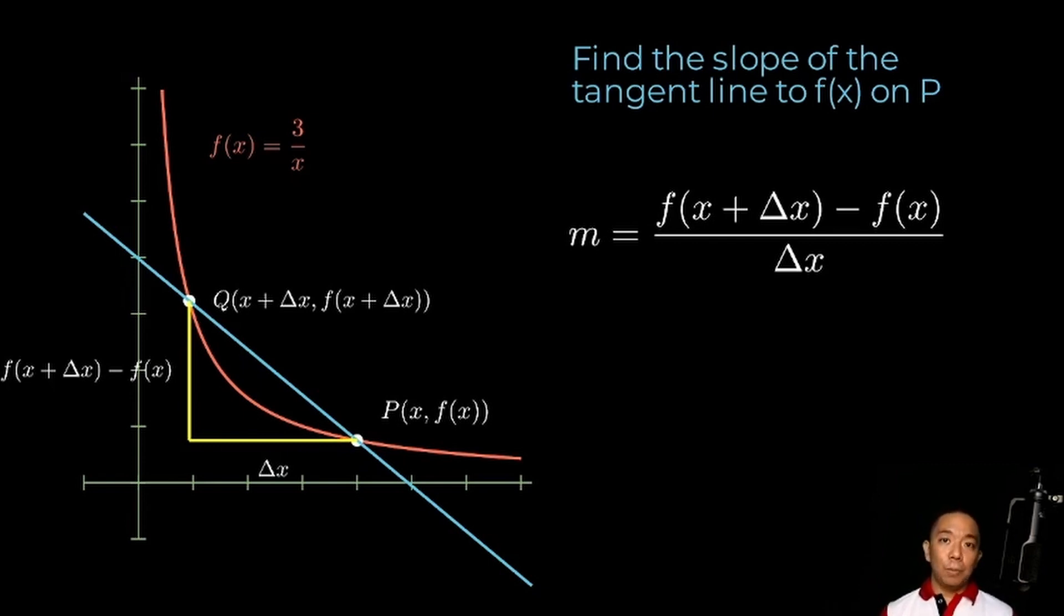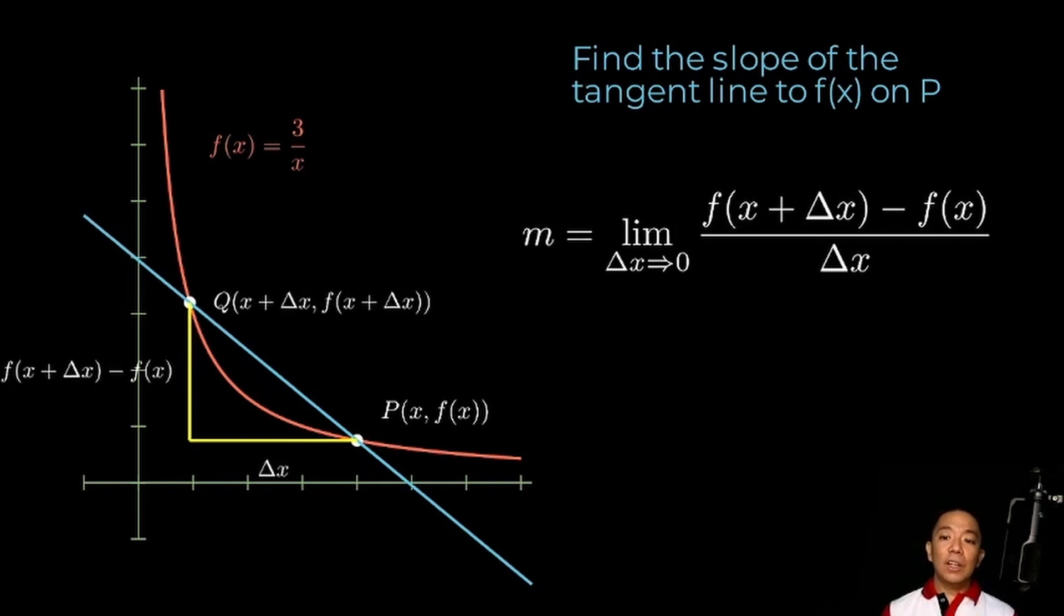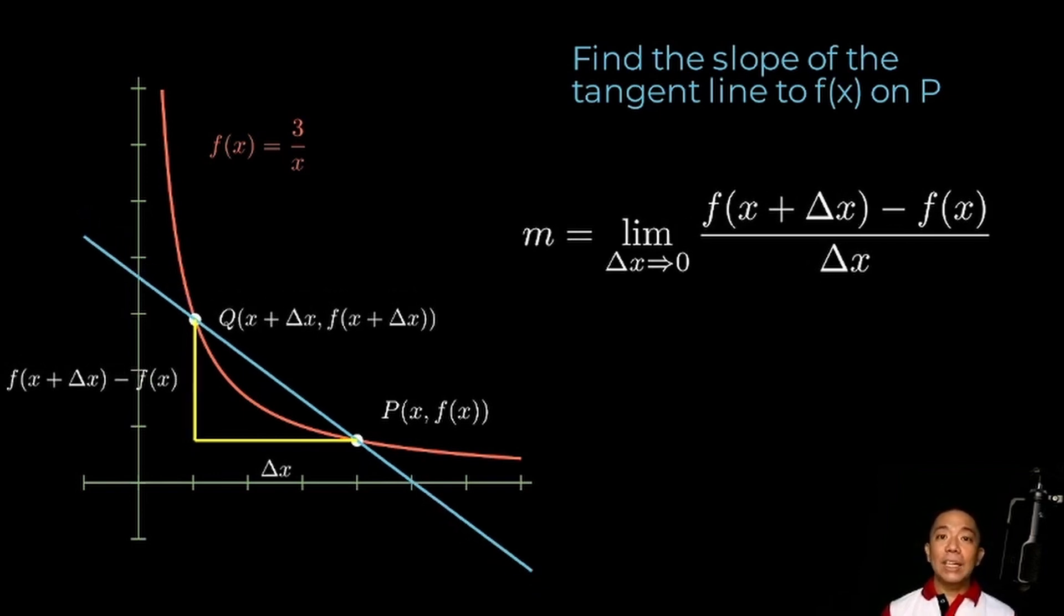But this is the slope of the secant line. Yung gusto natin yung slope ng tangent line. So, what can we do? We can let delta x get smaller and smaller. Or basically, we'll let it approach zero. So, to find the slope of the tangent line, we'll take the limit of this expression as delta x approaches zero.